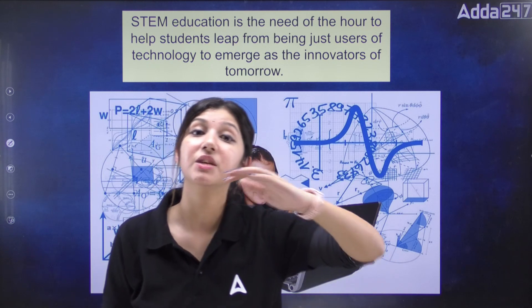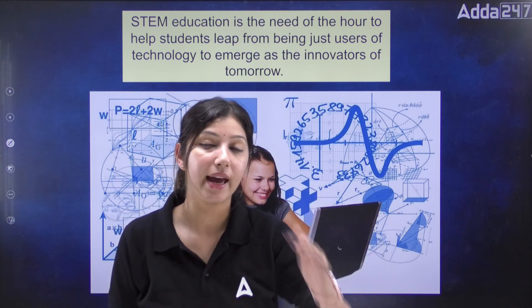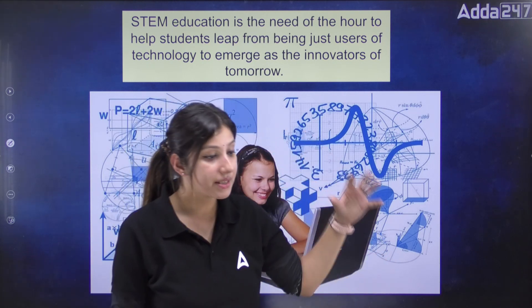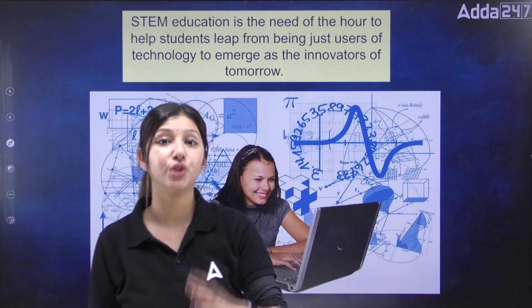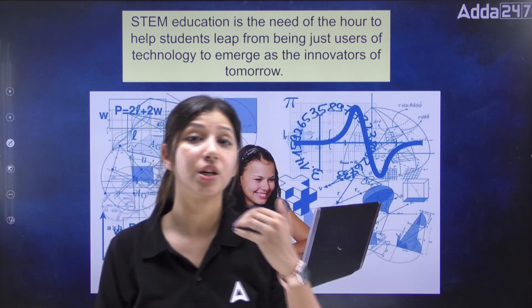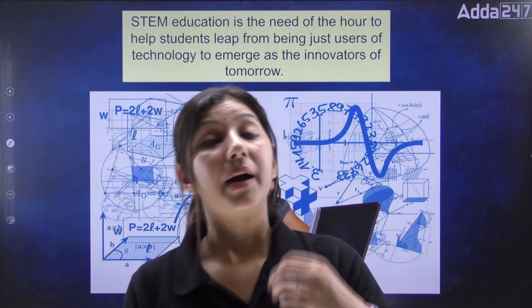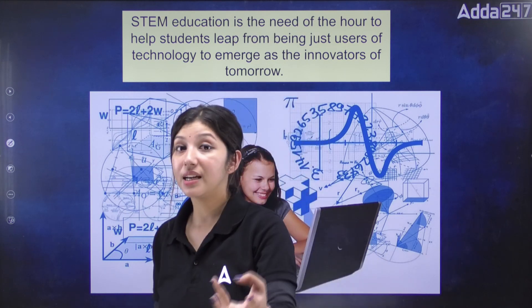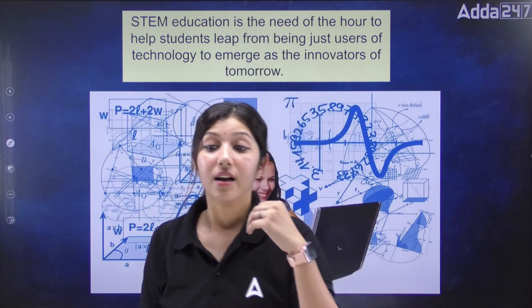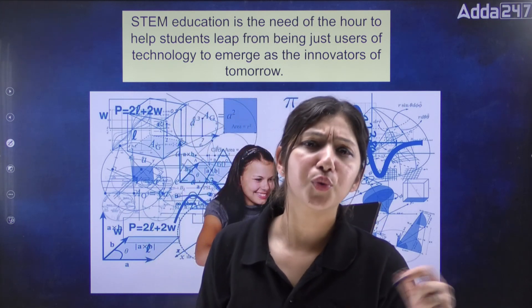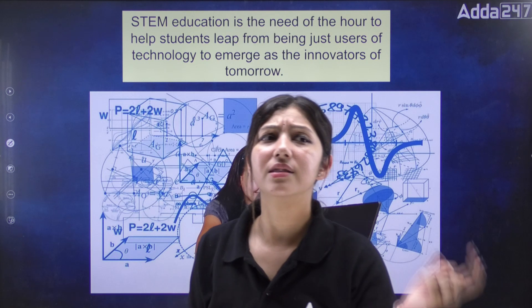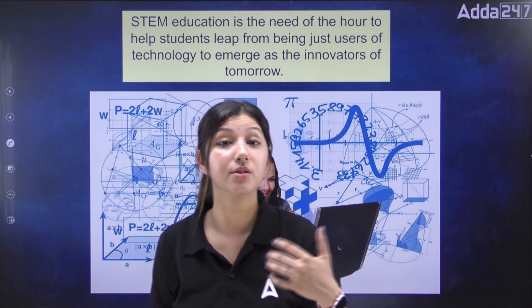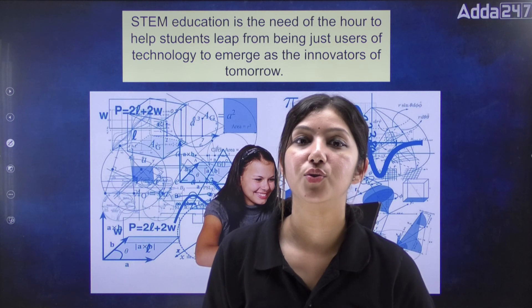Why is technology growing? Because there is a change in the system. If this system starts at a basic school level, things like education policies, the way of studying, and the understanding of concepts — why a derivation or concept is needed — will all change. Then STEM education can bring a big revolution.